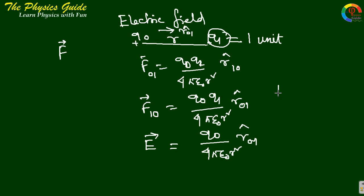So electric field due to Q0 at R distance is equals to Q0 by 4πε₀R² times R01.